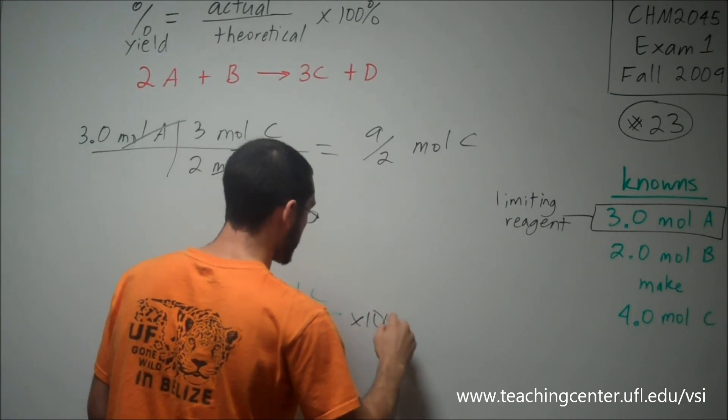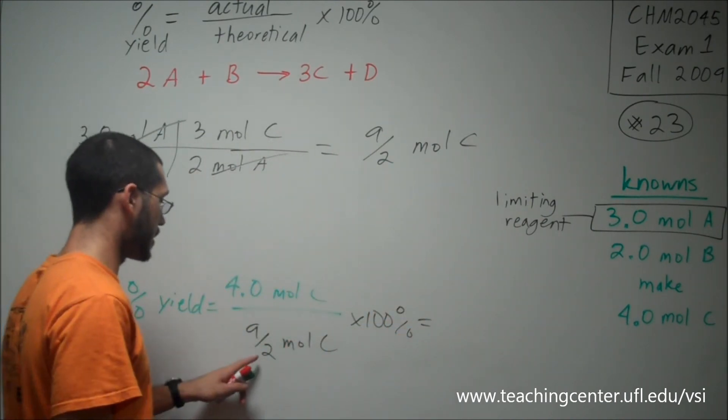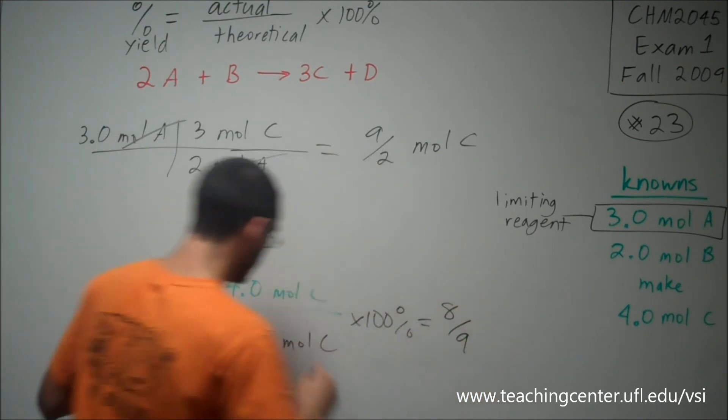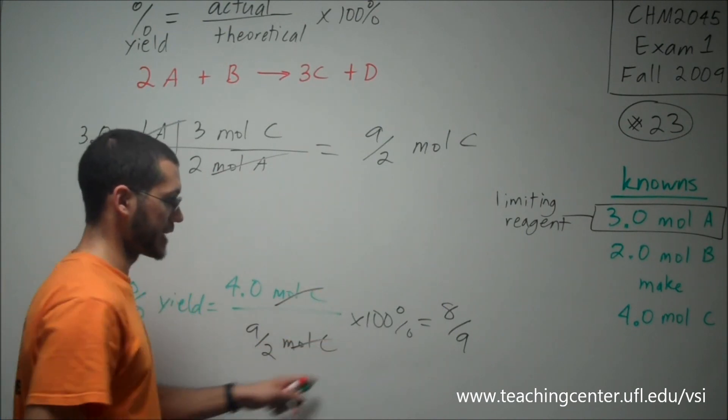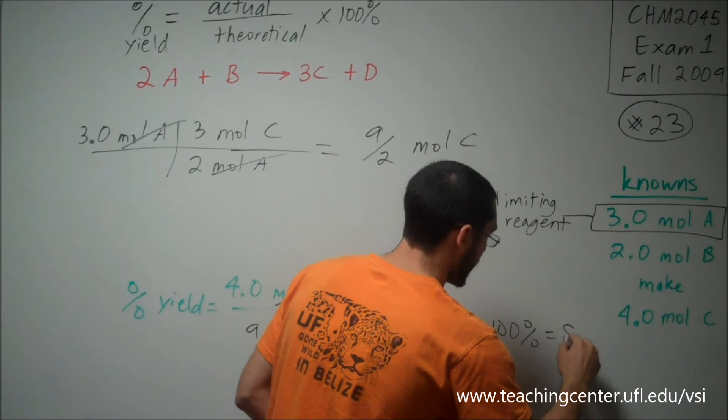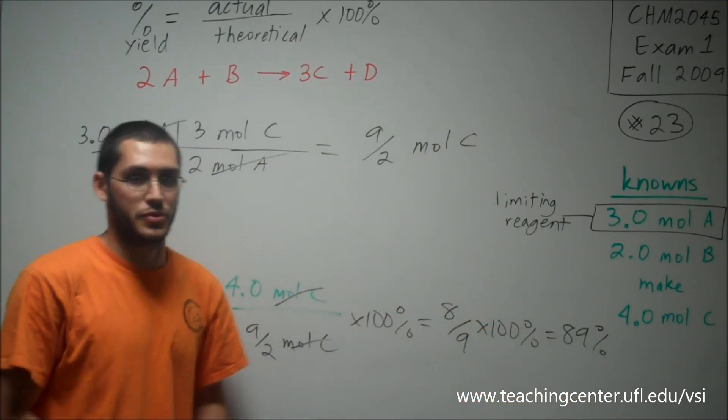Multiplied by 100%. For those of you afraid of fractions, don't be. 2 comes up to the top, makes 8/9ths. Moles C cancel. I just multiply that by 100%, and I get 89% yield. Not too bad for chemistry.